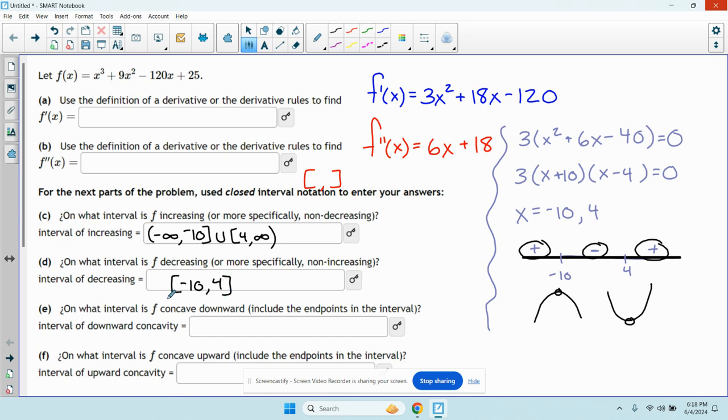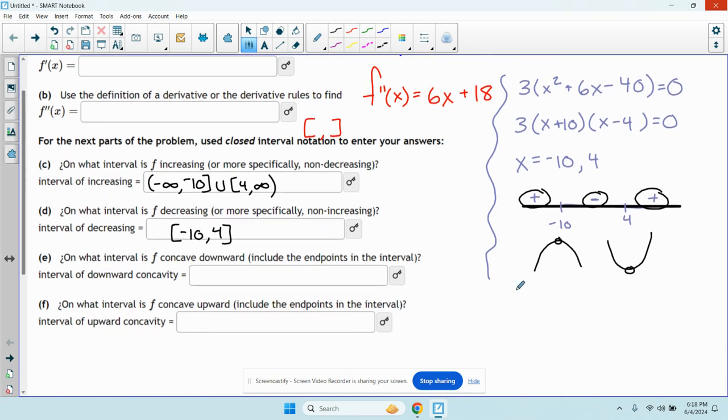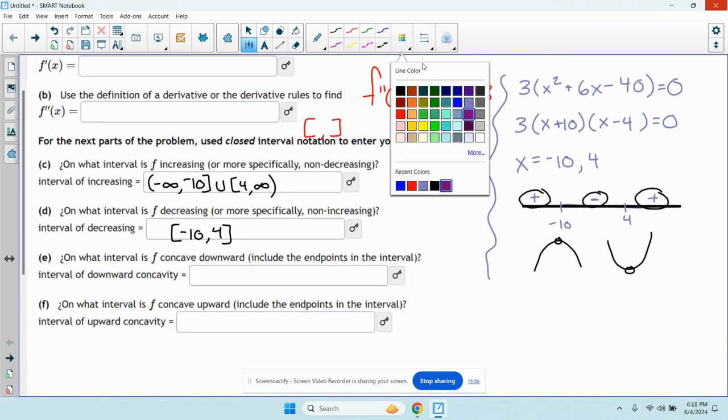On what interval is f concave down? So that's going to be the same concept, except now we're going to use the second derivative. So I'm going to set the second derivative equal to 0.